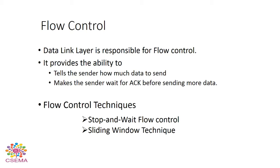Flow control is the ability to control the flow of data from one system to another. As you know, the internet is a network of networks where millions to billions of devices are connected to communicate with one another. When these devices are communicating, the data flows from one system to another, and flow control is the major task and sole responsibility of the data link layer — to control the data flow and all the errors that occur in the systems. Flow control provides the ability to tell the sender how much data is to be sent and makes the sender wait for an acknowledgement before sending more data.